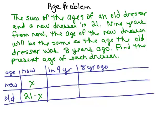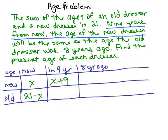Nine years from now, the age of the new dresser — we need to know the age of the new dresser in nine years. If the new dresser is X years right now, how old will it be in nine years? You would add nine, so that gives us X plus 9. Nowhere in this problem does it say anything about the old dresser in nine years, so we don't have to fill that part in — just leave it blank.